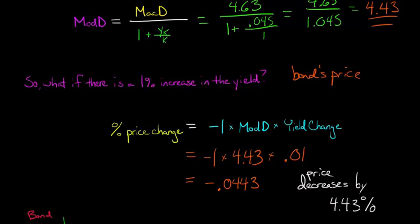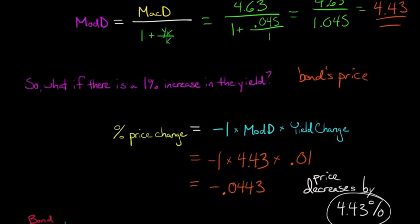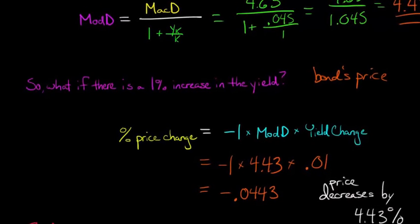So by taking that modified duration, we can say, look, we had a 1% increase in the yield. What happens to the bond's price? Well, it's going to go down by 4.43%.